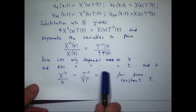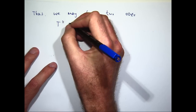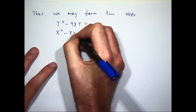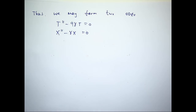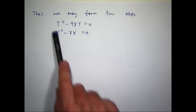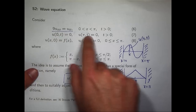Rearranging these equations gives the following. When we did the heat equation, we would solve for big T straight away because it was a first-order problem. But now it's slightly more difficult because we've got a second-order problem, so I'm going to leave that for a while and come back to it. I'm going to work on the X equation first.